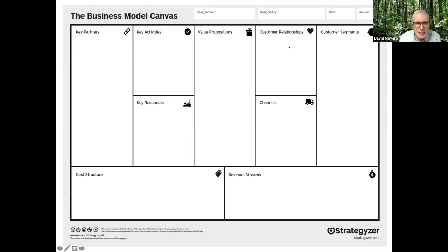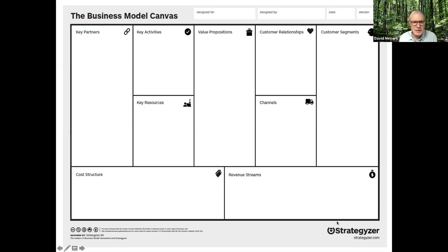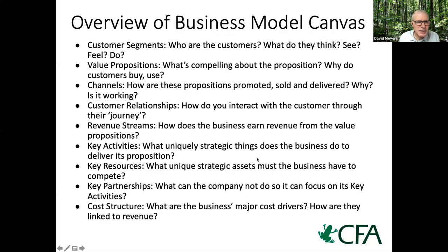Then you sell to people — that's your customer relationships, sales channels, and customer segmentation. On the left side are your costs to produce the goods, and on the right are your revenue streams from selling goods or services. That's how I see this structurally.